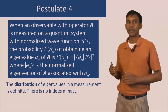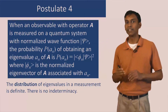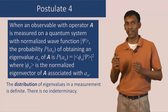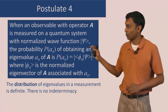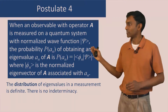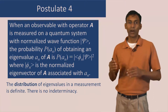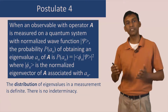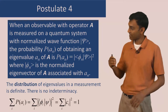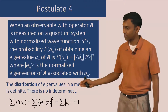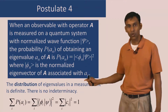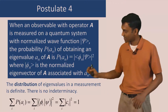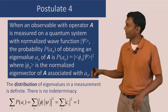The formal statement of postulate 4: when an observable with operator A is measured on a quantum system with normalized wave function psi, the probability P(A_n) of obtaining the eigenvalue A_n of A is given by the projection of psi onto the corresponding eigenfunction phi_n, modulus squared. You can check that this is consistent: summing the probabilities of obtaining all different eigenvalues leads to the condition that the sum of squares of all coefficients equals 1, which holds because the wave function psi is normalized.